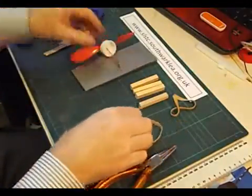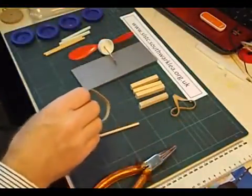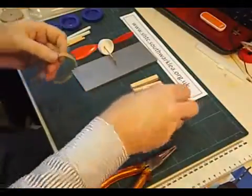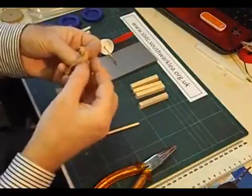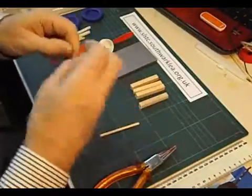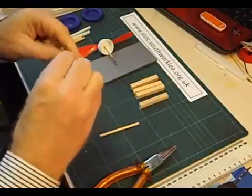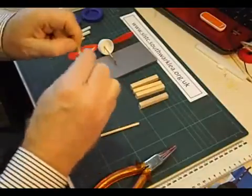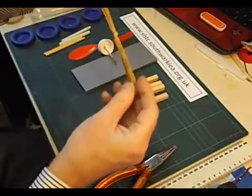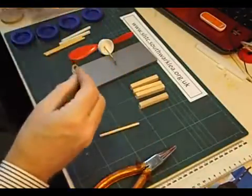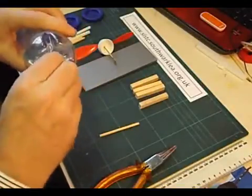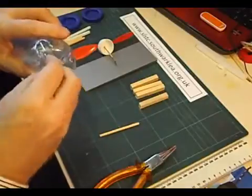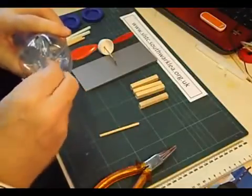Next thing we're going to do is to thread the rubber bands through. You need to join the two rubber bands together like that. Pull them tight, get the knot quite tight otherwise it won't go through the hole in the bottom of the bottle. And you should be able to get the rubber band through the hole. If you can't make the hole a bit bigger.